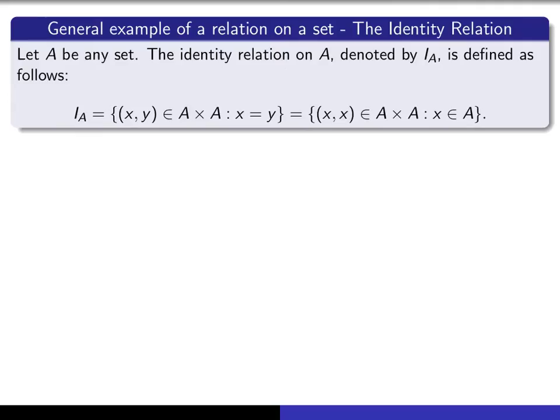And finally, we define what is meant by the identity relation on a set. We let A be any set, then the identity relation on A is denoted by I sub A, and it's given by this definition here. It's the set of all (x, y) in A cross A such that x is equal to y.